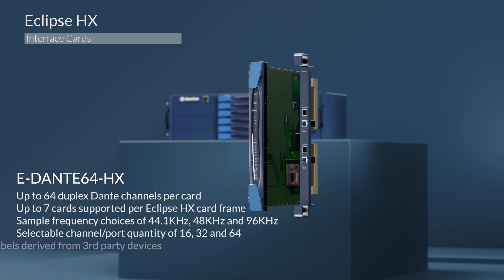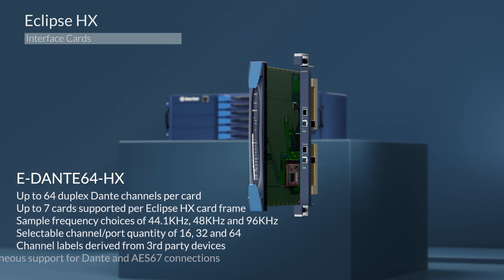Next up is the eDante. Up to 64 duplex Dante channels per card, with simultaneous support for Dante and AES67 connections. And when partnered with Dante Domain Manager, the card supports SMPTE 2110-30 and AES67 connections to and from third-party devices. The 64-channel high-density connection is ideal for local linking up to 64 connections or conferences between adjacent systems using one fiber pair connection. Sample frequencies of 44.1, 48, and 96 kHz, and a selectable channel or port quantity of 16, 32, or 64.